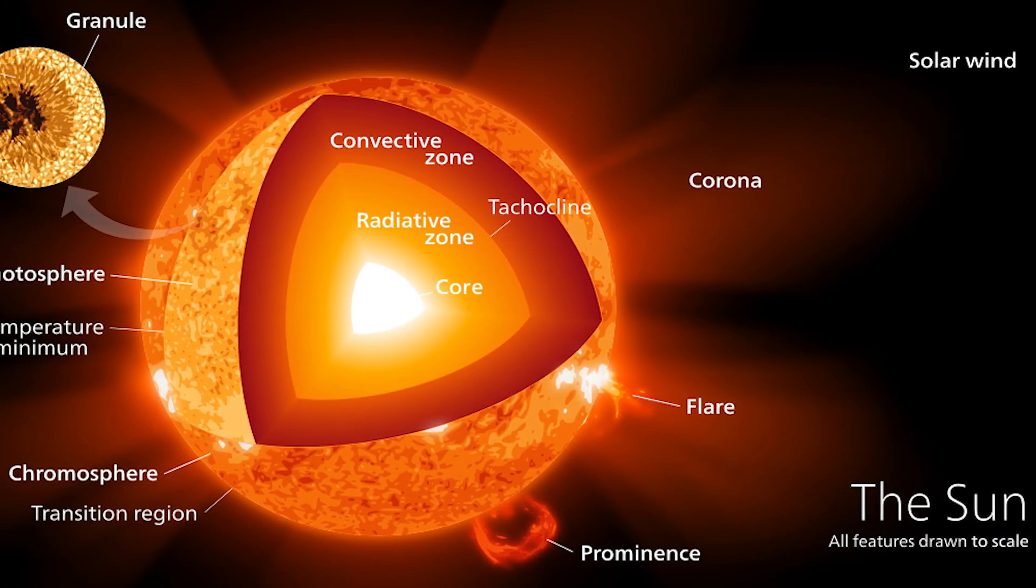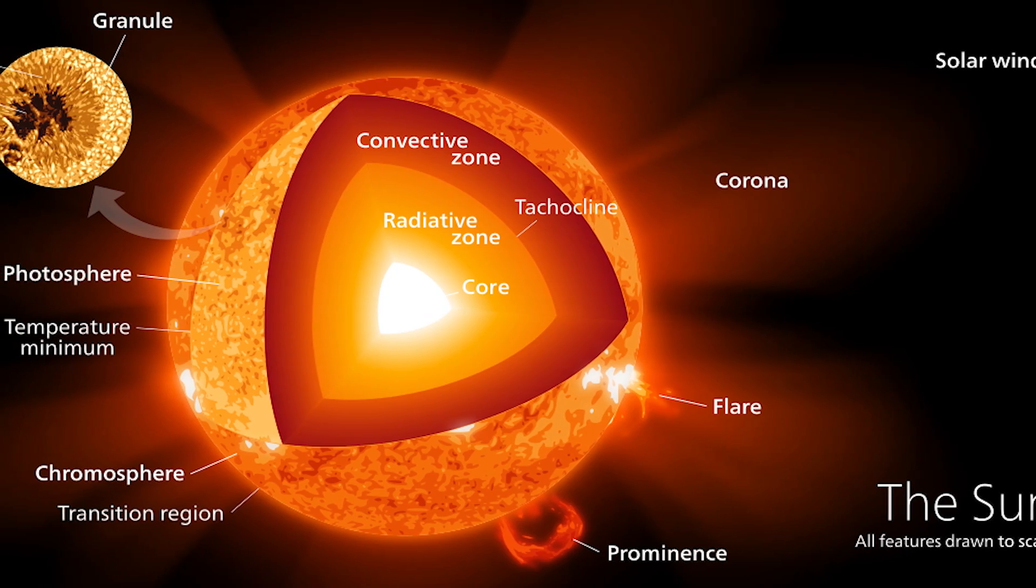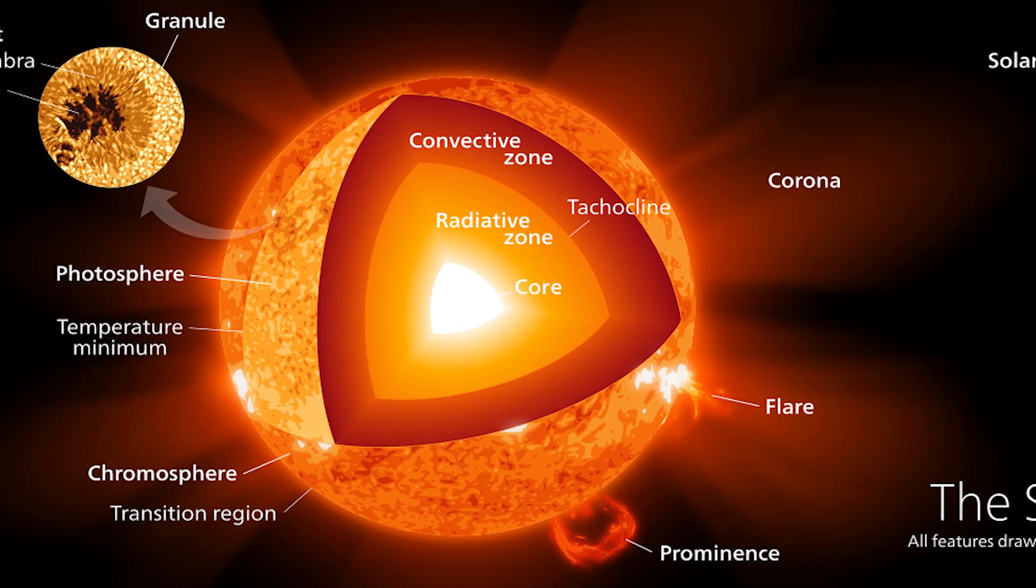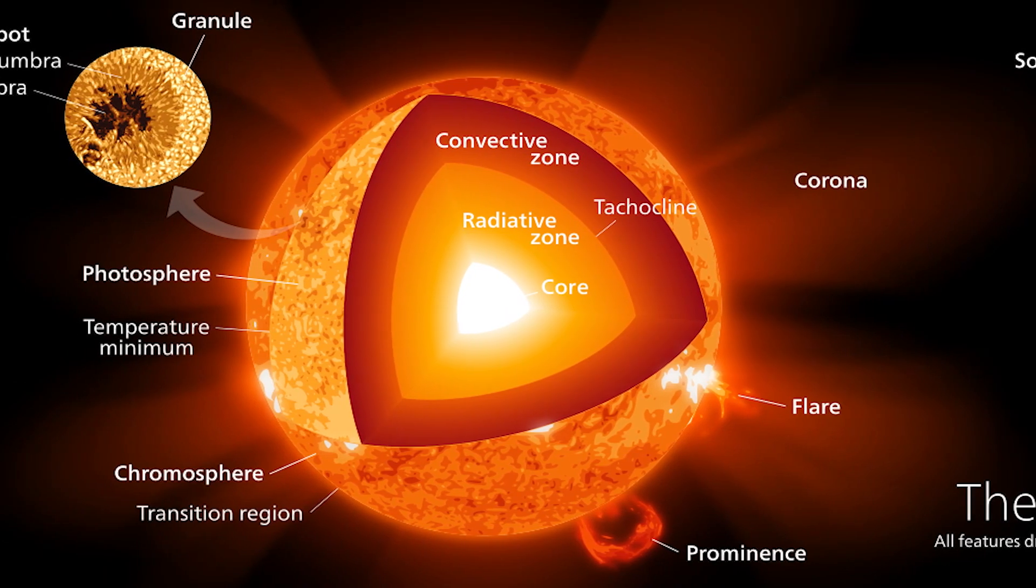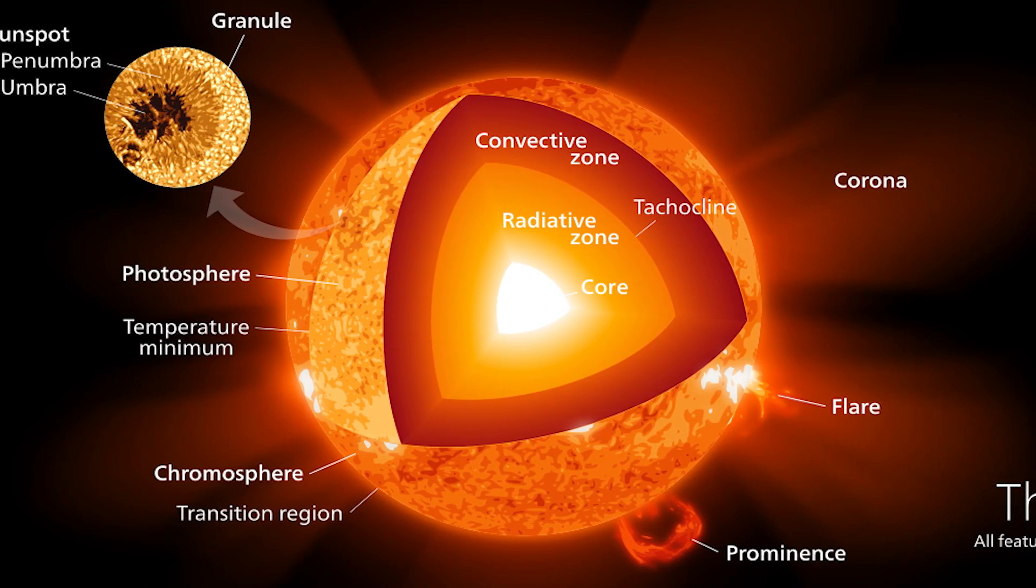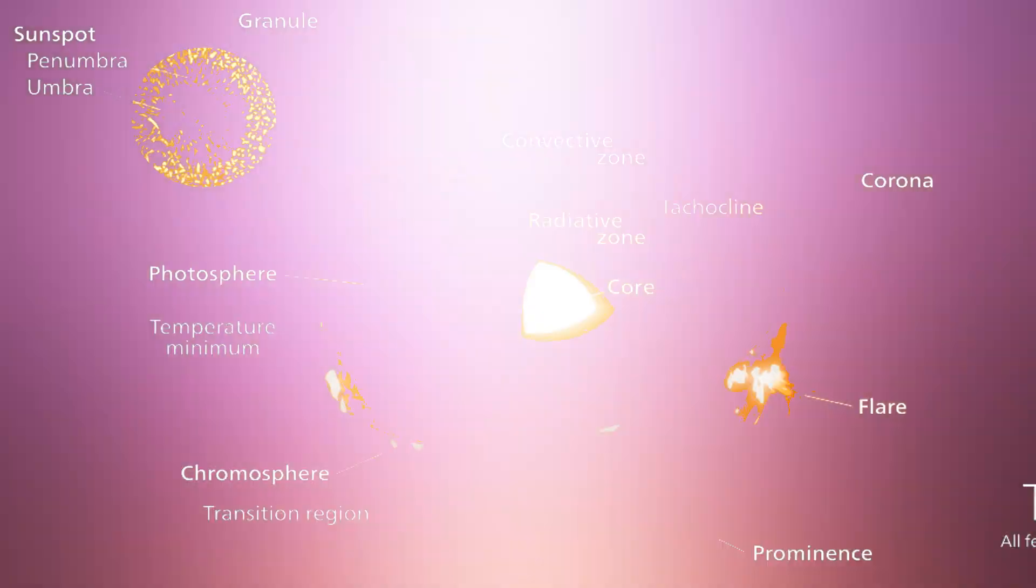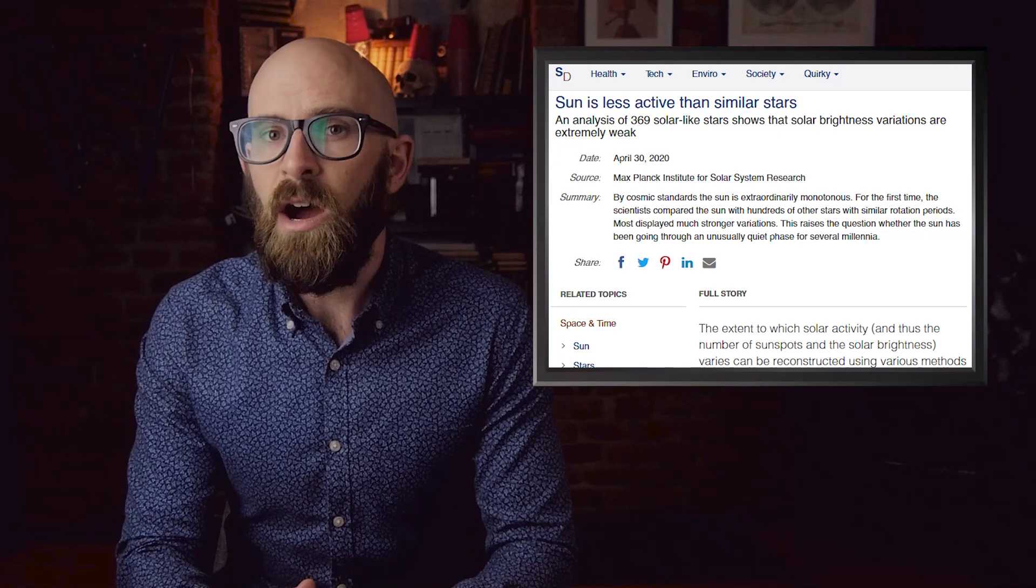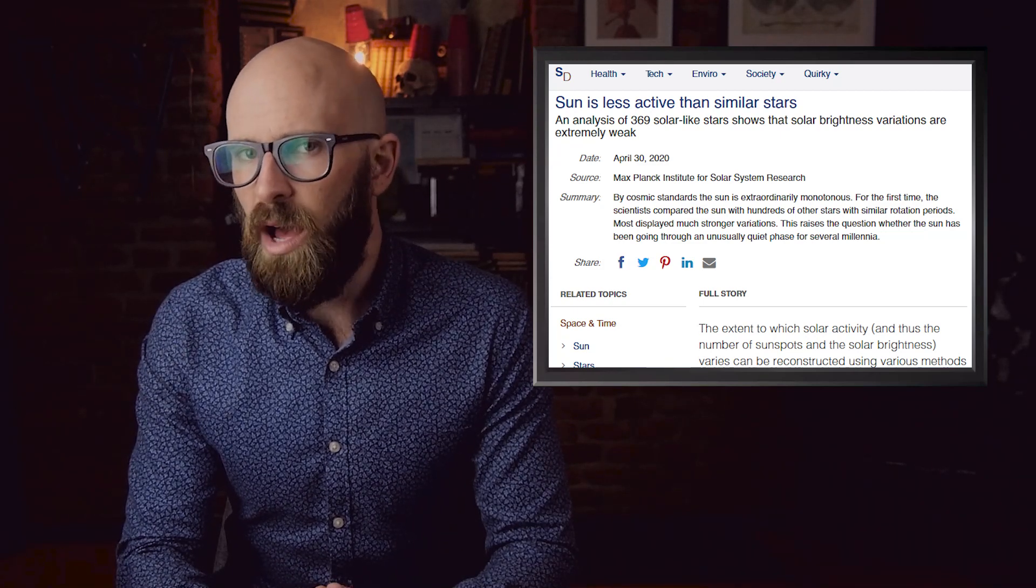There are many factors to consider when thinking of the relative calm nature of our star. We have data going back at least 8,000 years thanks to tree rings and other similar ways of examining the effects of solar activity on our planet, but that period of time is nothing compared to the age of the sun.